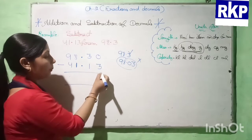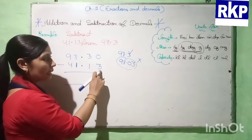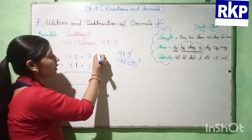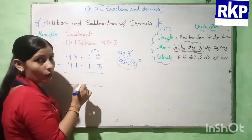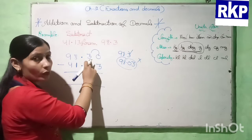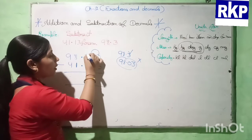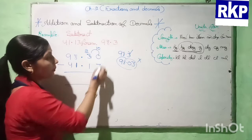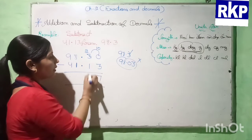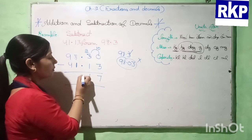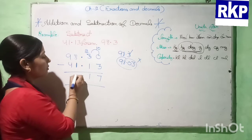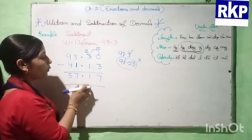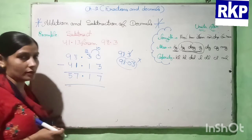Now we subtract. Here we have to subtract 3 from 0, but it is not possible, so we need to borrow. This 0 will borrow from 3, so here left 2 and here 10. 10 minus 3 is 7, and 2 minus 1 is 1. Now 8 minus 1 is 7, and 9 minus 4 is 5. So 57.17 will be the answer.